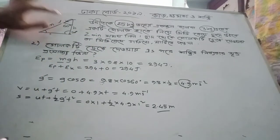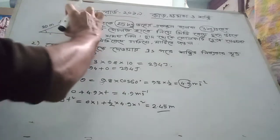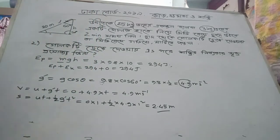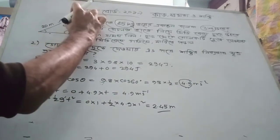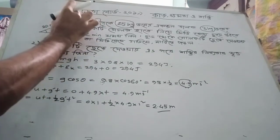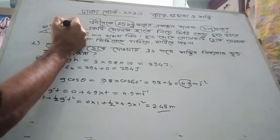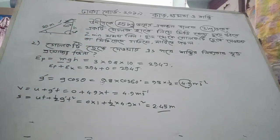0.1 squared is equal to 2.45 meters. And so this is 2.45 meters.